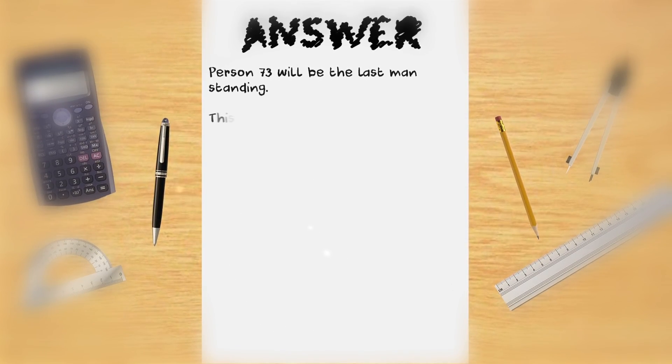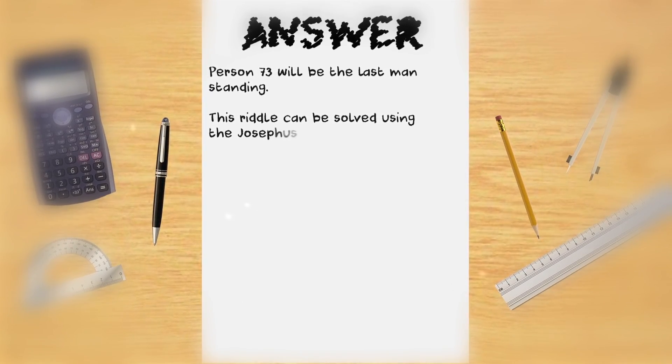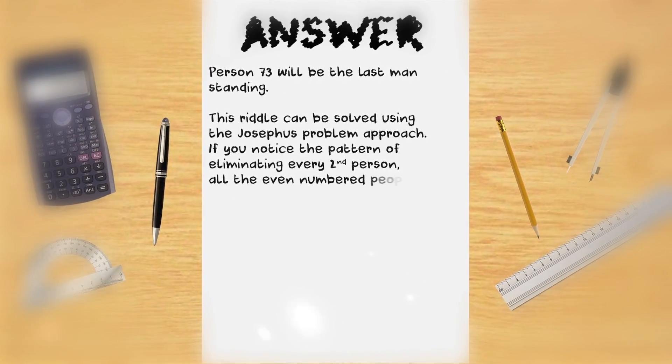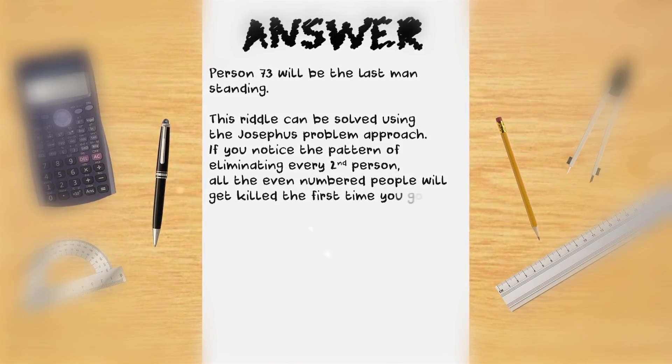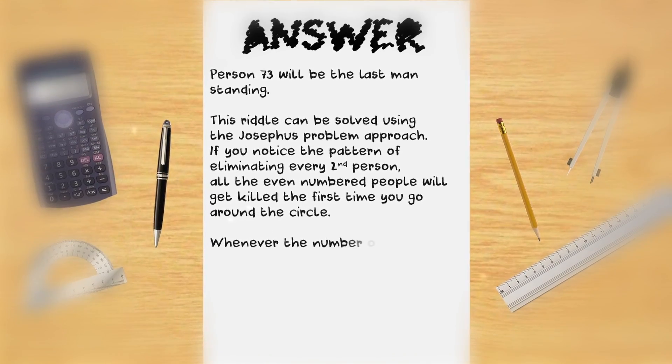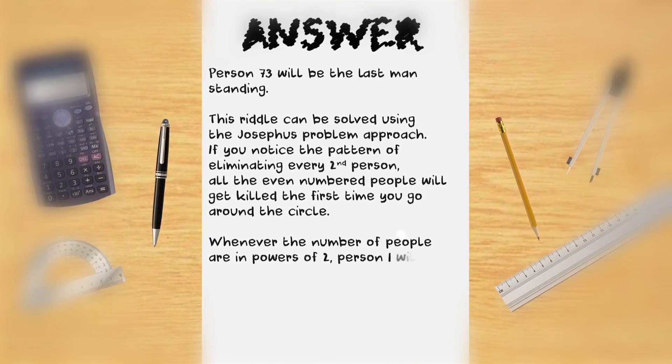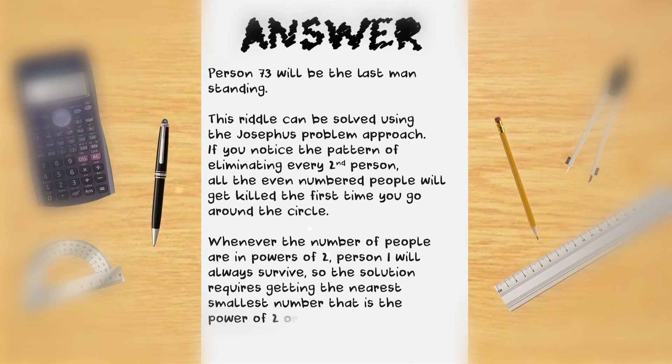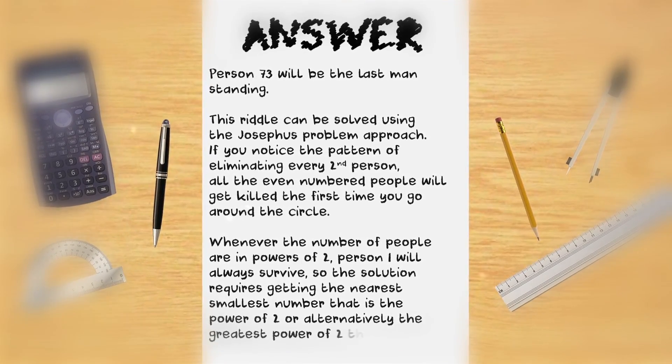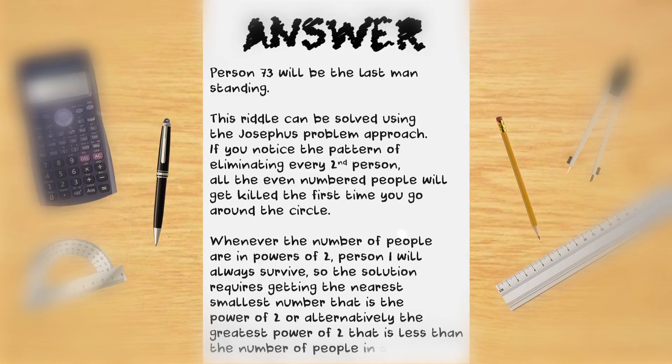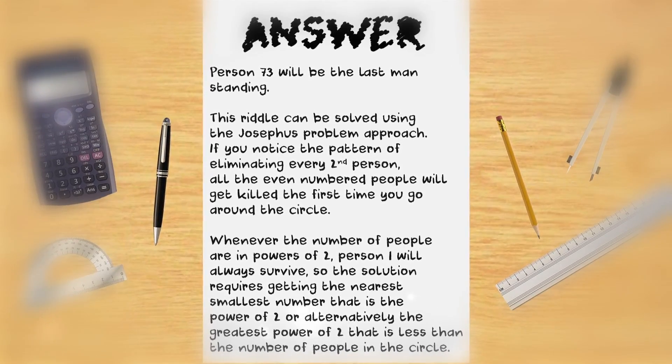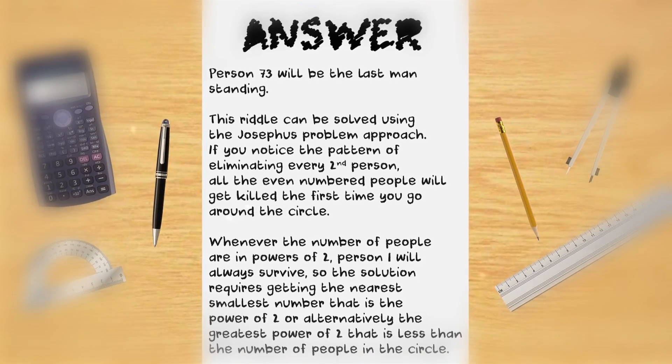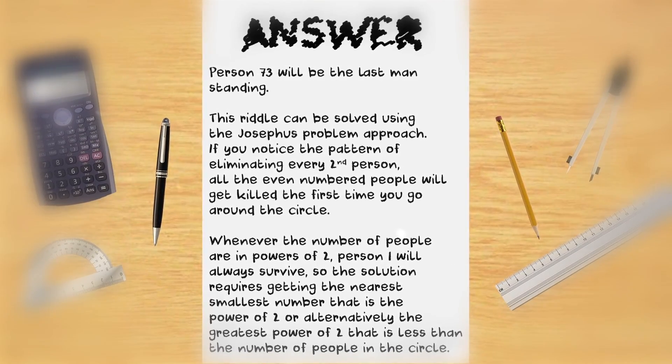Answer, person 73 will be the last man standing. This can be solved using the Josephus Problem approach. If you notice the pattern of eliminating every second person, all the even-numbered people will get killed the first time you go around the circle. Whenever the number of people are in powers of 2, person 1 will always survive so the solution requires getting to the nearest small number that is the power of 2 or alternatively the greatest power of 2 that is less than the number of people in the circle.